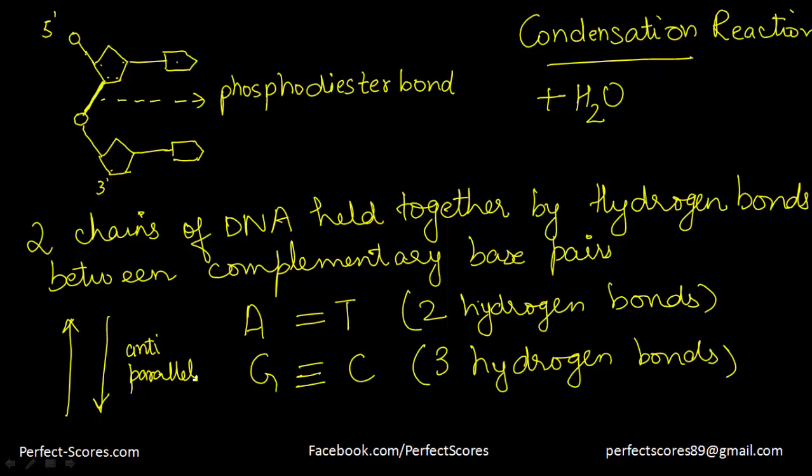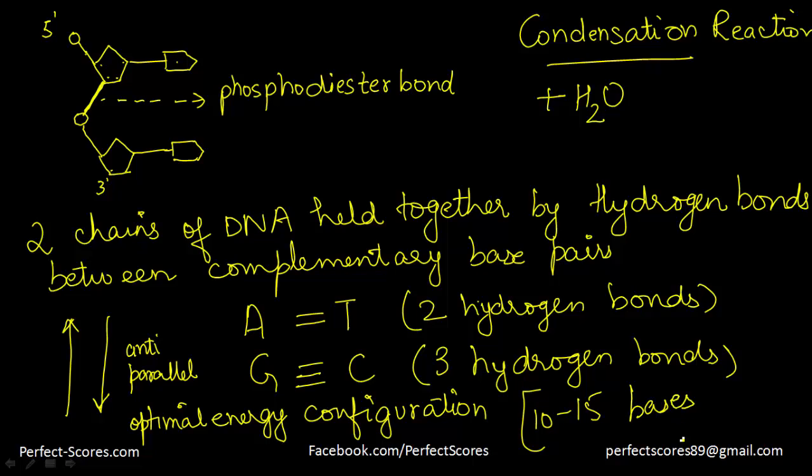And as the polynucleotide chain lengthens, the atoms that make up the molecule arrange themselves in an optimal energy configuration. This position, the optimal energy configuration, gives a position of least resistance. That is why the double-stranded DNA twists and becomes a double helix with approximately 10 to 15 bases per twist. So this is why the DNA helix is in the form of a helix and curved like a staircase.